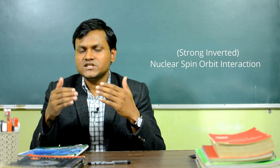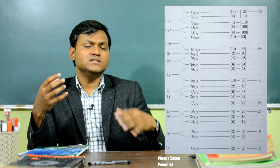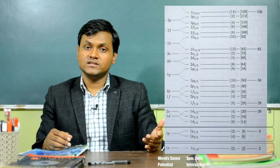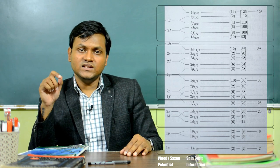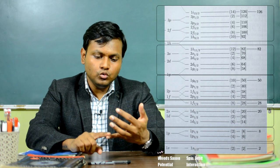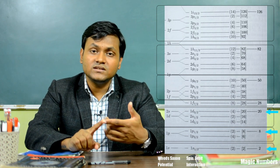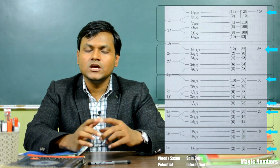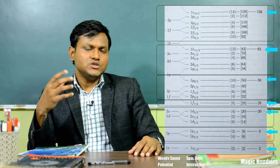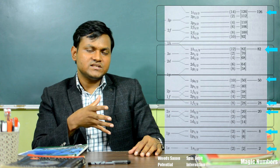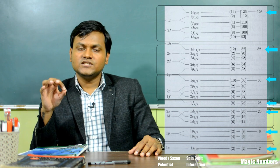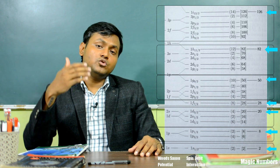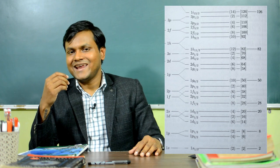When this spin-orbit interaction was taken into account, it was seen that these new energy levels formed what is known as shells. When you calculate the numbers of neutrons and protons present in these shells, the numbers correspond to 2, 8, 20, 28, 50, 82, and 126 — which are the magic numbers. So the magic numbers can be explained by solving Schrödinger's equation for the Woods-Saxon potential and also introducing the concept of spin-orbit interaction.